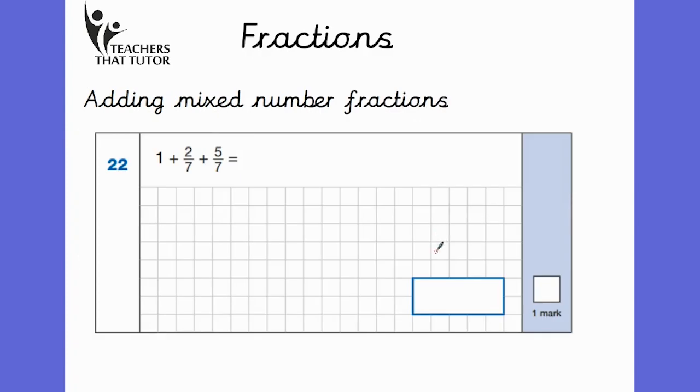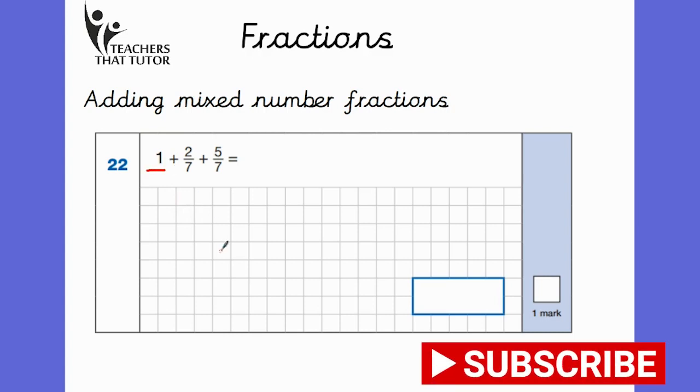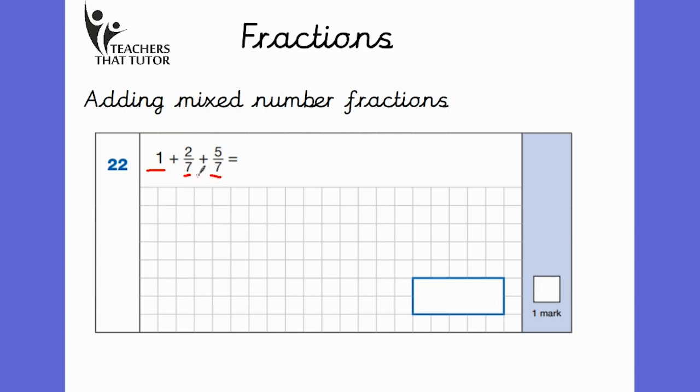So adding mixed number fractions. Again, we're asked to add fractions here. However, you can see that one of these is not actually a fraction, but a whole number. So we're fortunate that all of these are both 7ths, which means we just need to convert this whole number into 7ths. One whole in 7ths would, of course, be 7 7ths. Because I know if I had 7 pieces of a pizza, and there were 7 in total, I'd have the whole thing. So now that I've converted that 1 into 7ths, I can go ahead and add the other parts to it.